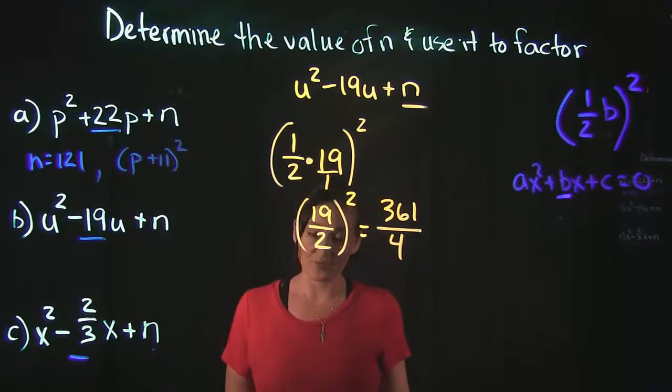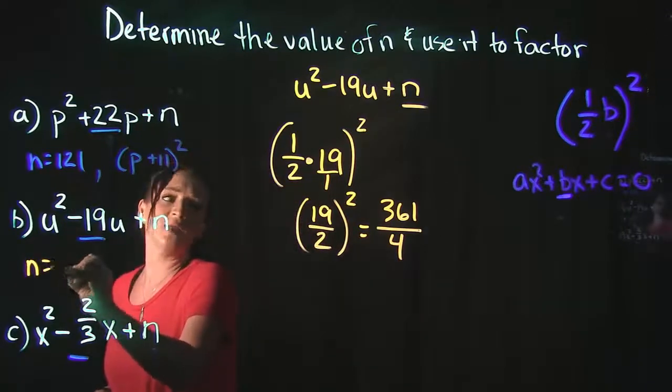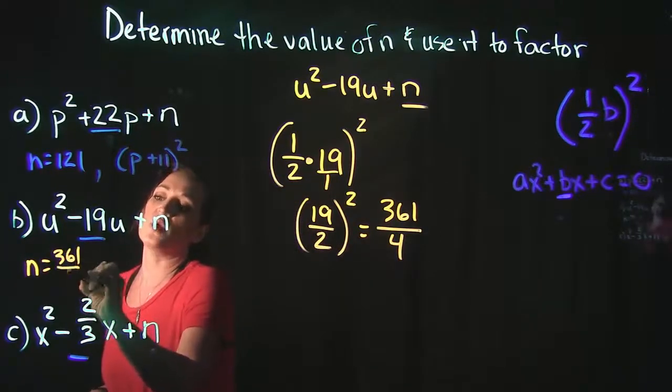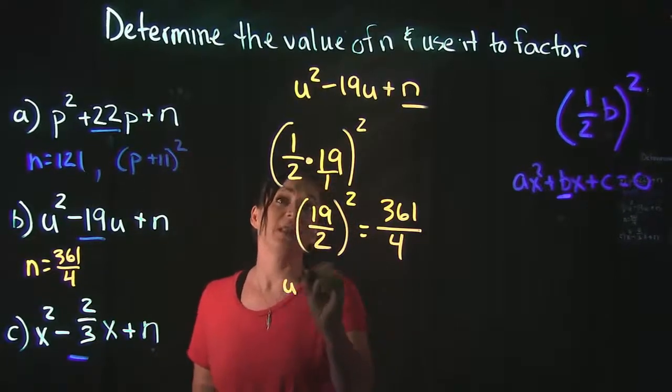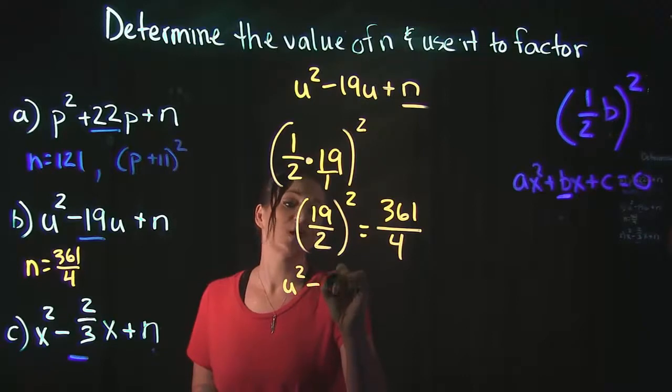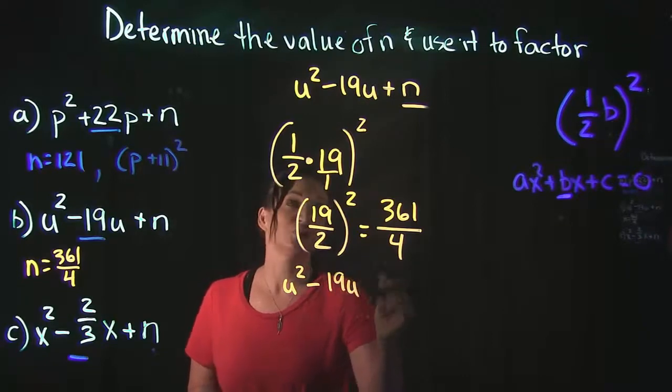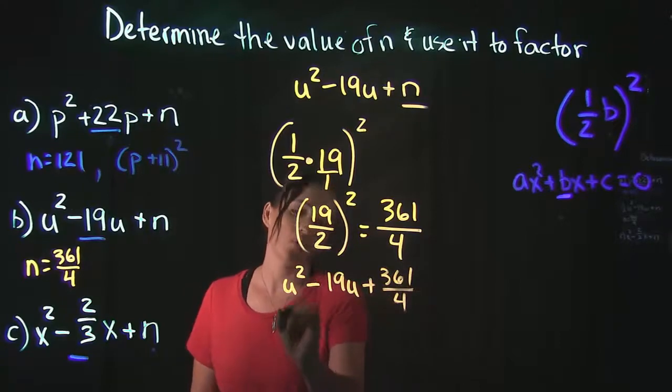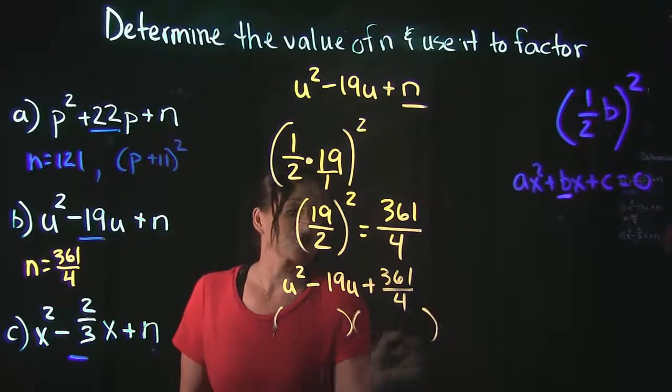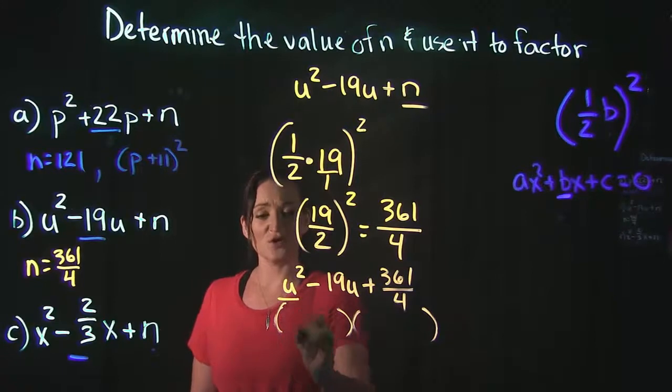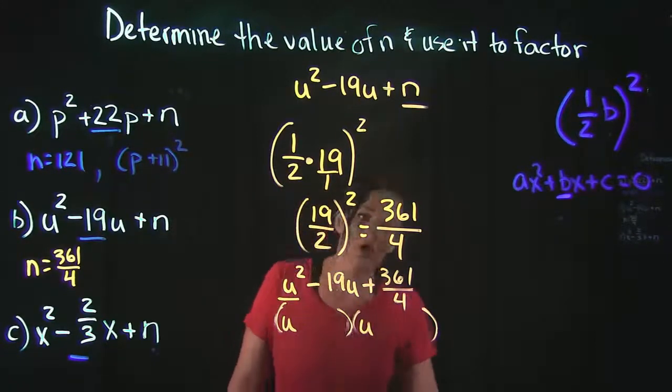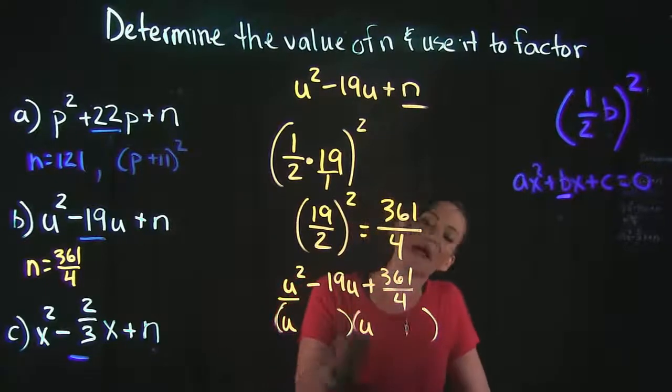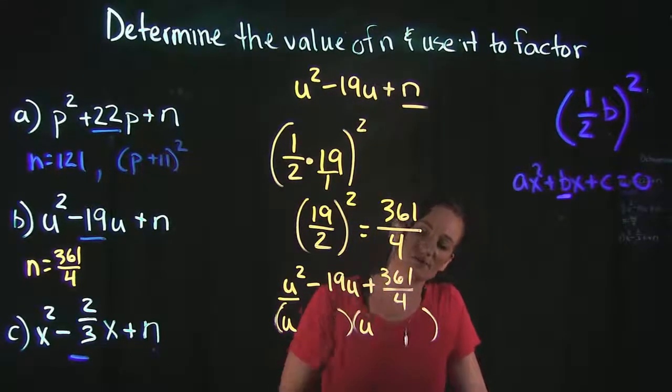So n is equal to 361 over 4, so we're then going to take that and plug it into our equation. We have u squared minus 19u plus 361 over 4, because we still need to factor this. Now when we factor this, we look at our first term u squared, and we know that needs to be u times u. So we're looking for what multiplies to get 361 over 4 but adds or subtracts to get 19.